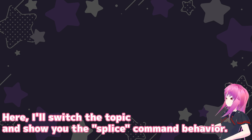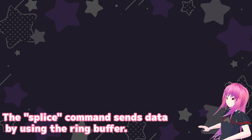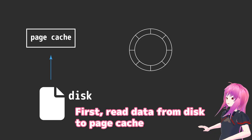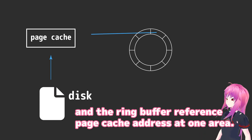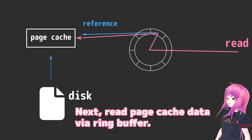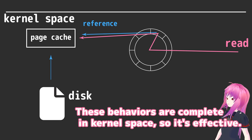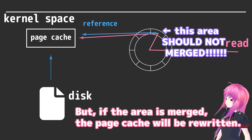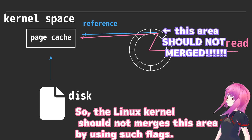I'll switch the topic and show you the splice command behavior. The splice command sends data by using ring buffer. First, read the data from disk to page cache. The ring buffer refers to the page cache address at one area. Next, read page cache data via ring buffer. These behaviors complete in kernel space, so it's efficient. But if the area is merged, the page cache will be rewritten. So the Linux kernel should not merge this area by using special flags.